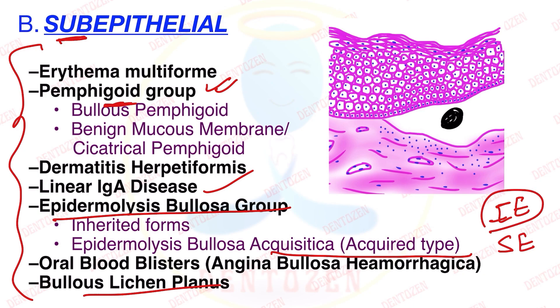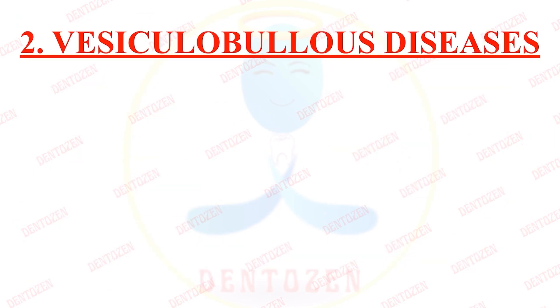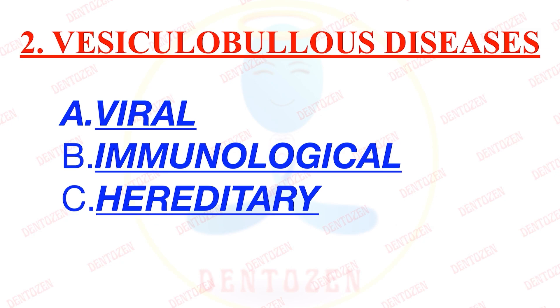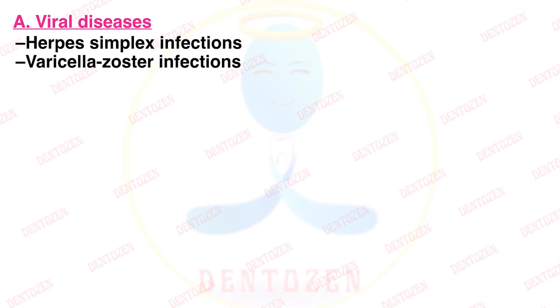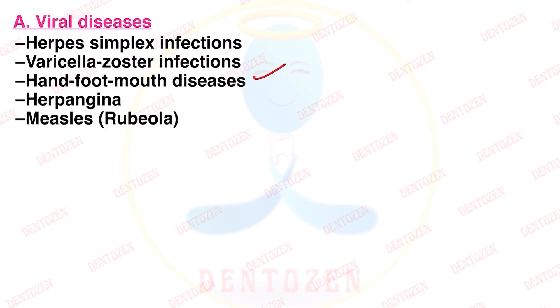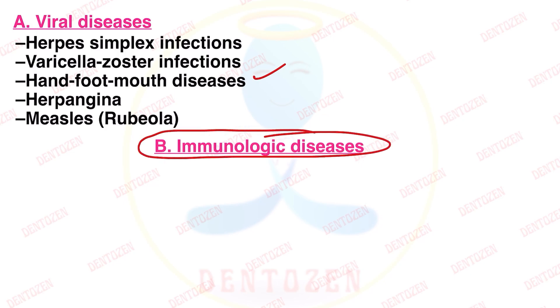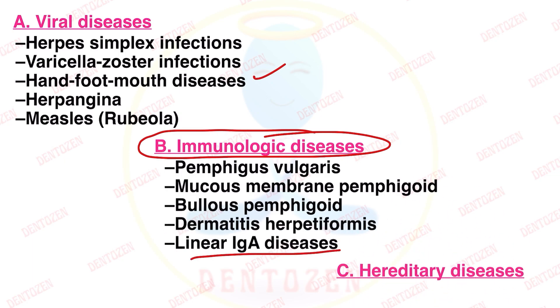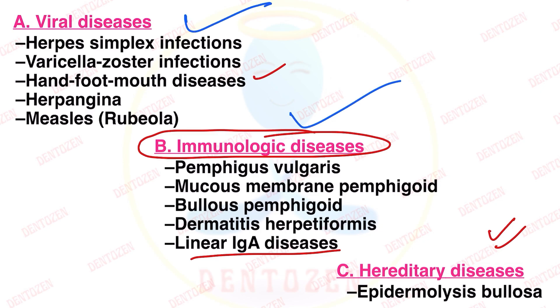That completes the first classification. Based on location, lesions are intraepithelial or subepithelial; intraepithelial can be acantholytic or non-acantholytic. The second classification is based on cause. Causes can be viral, immunological, or hereditary. Viral examples include herpes simplex, varicella zoster, hand foot mouth disease, herpangina, and measles. Immunological diseases — involving antigens — include pemphigus vulgaris, mucous membrane pemphigoid, bullous pemphigoid, dermatitis herpetiformis, and linear IgA disease. Hereditary examples include epidermolysis bullosa.